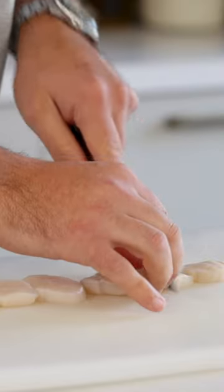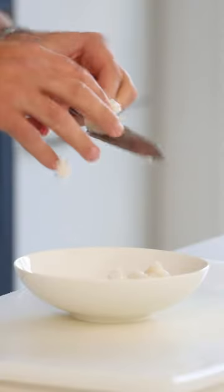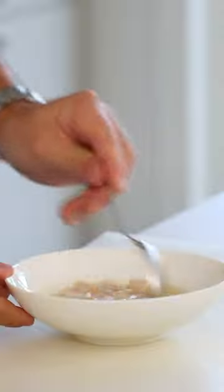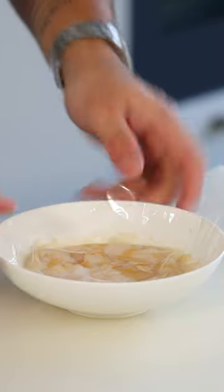Then cut some scallops in eight even pieces and place them in a bowl. Now mix the tiger milk and submerge the scallops completely. Let this marinate for one hour in your fridge.